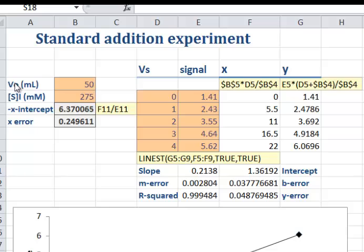The initial volume of our unknown, in this case 50 milliliters. And in this hypothetical case, I said that our standard stock solution had a concentration of 275 millimolar.